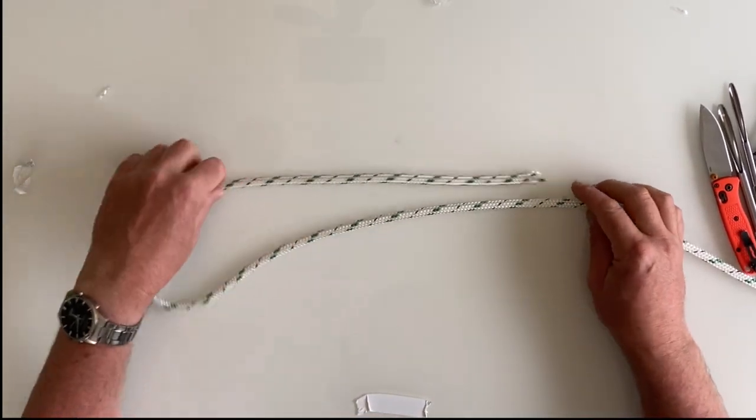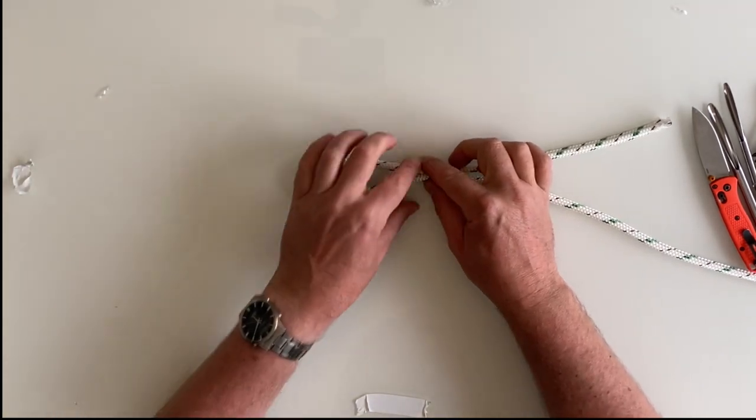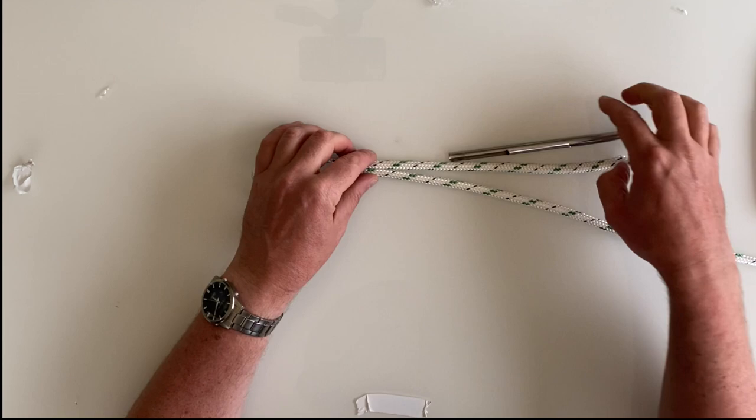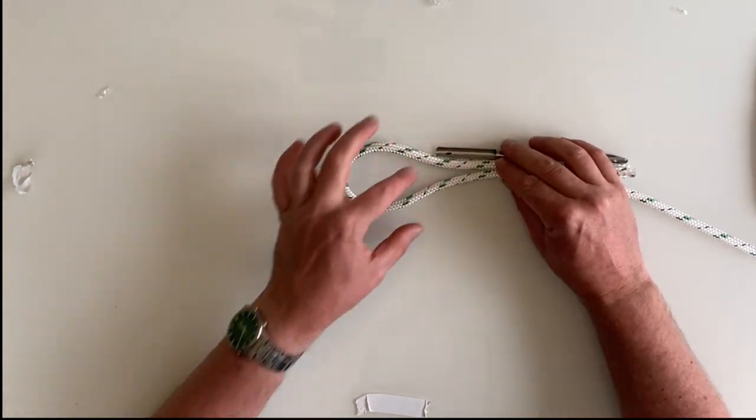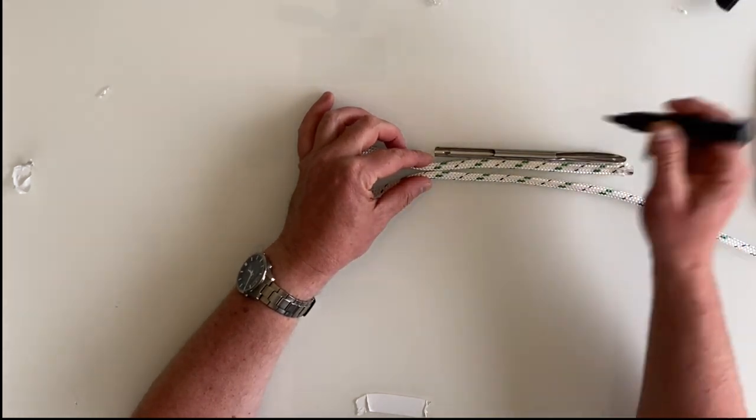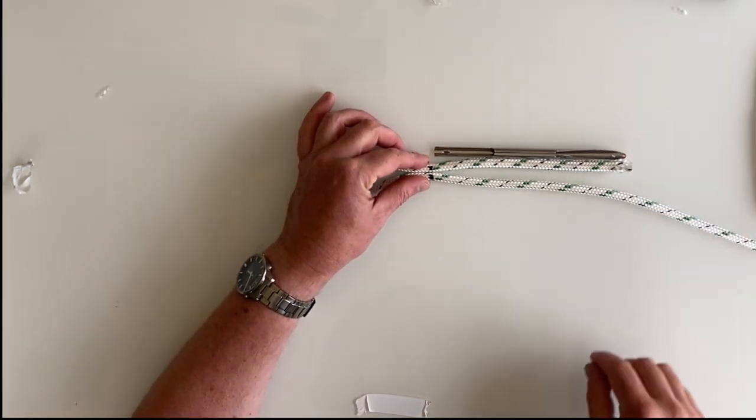I'm going to put the eye splice in this bit of braid on braid rope. So I'll just get the eye size gauged first. I'm going to leave a tail about a fid length. So that's why I've got the fid there. Now where the eye meets I'm going to put down a marker. So that's my eye gauged up.